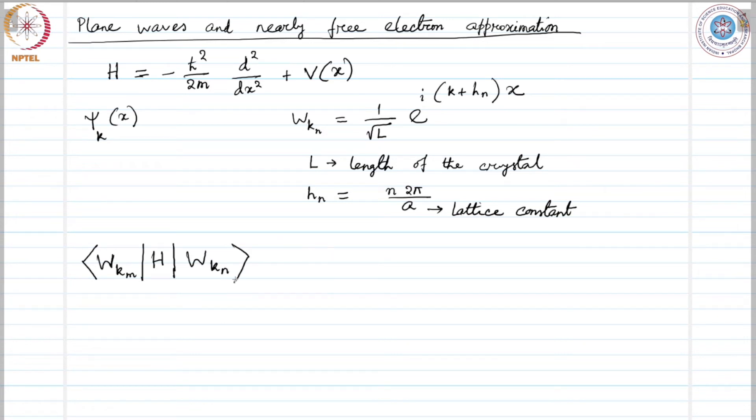This gives us the matrix element which is represented as h cross squared over twice m k plus h n squared times a Kronecker delta function delta m n. If m and n are different then this quantity is going to be 0, it only contributes if m and n are equal.